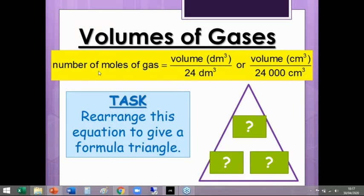So equation at the top there. Number of moles of gas - I'll explain what that moles thing means in a second - equals volume divided by 24. Now, there's two options here. You can either have it as volume divided by 24 or volume divided by 24,000. And one or two people have already started asking, what does the dm mean? So cm is centimetre cubed. Dm is a decimetre cubed.